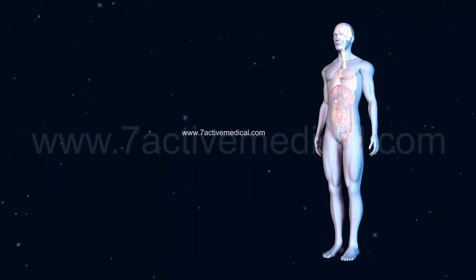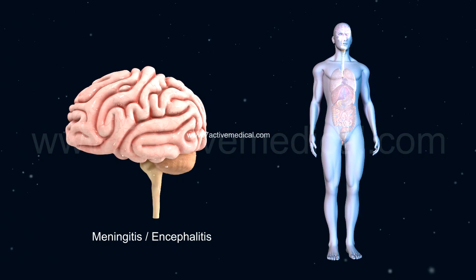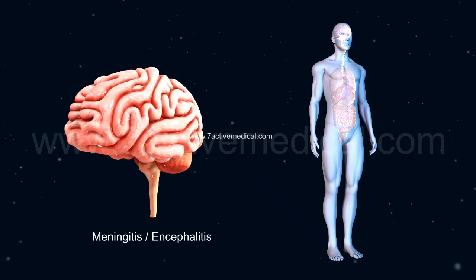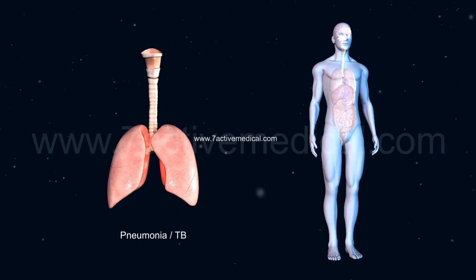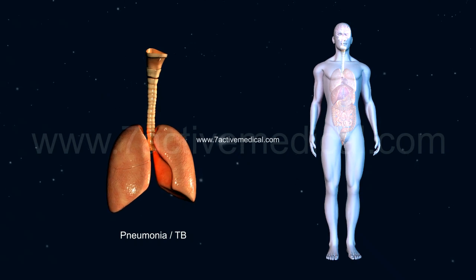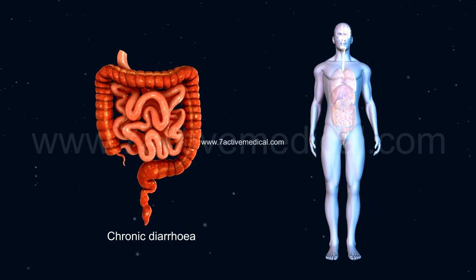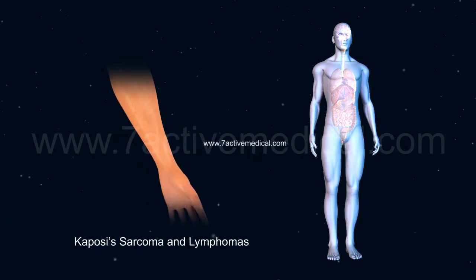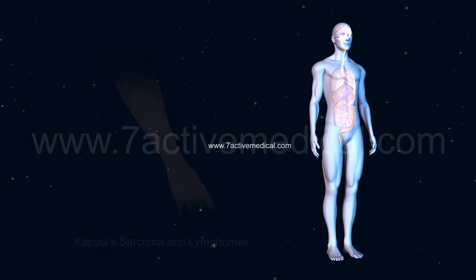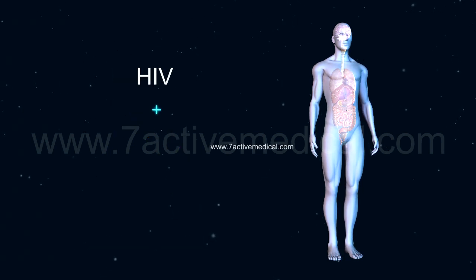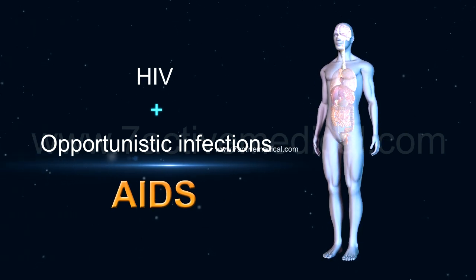Some of the common opportunistic infections associated with an HIV infection include: meningitis and encephalitis; pneumonia, especially pneumocystis carinii, or TB; chronic diarrhea caused by parasitic infections; and cancers such as Kaposi's sarcoma and lymphomas. A person is said to have AIDS when infected by HIV and has at least one opportunistic infection.